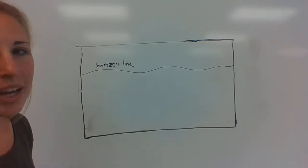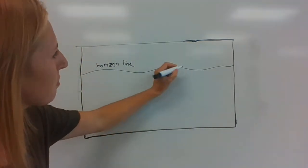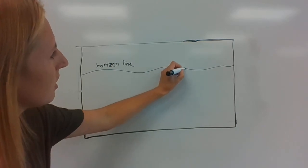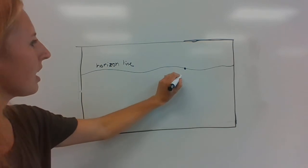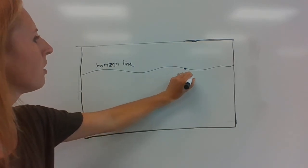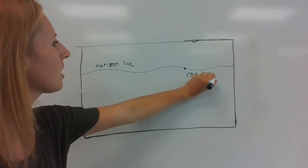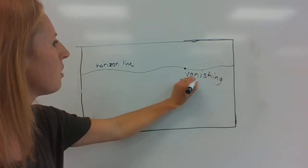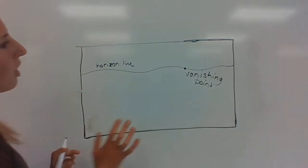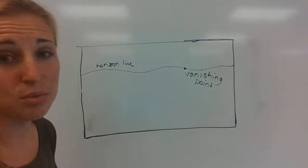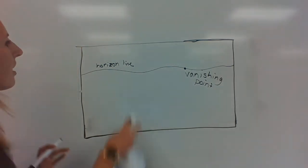So somewhere on your horizon line you are going to put in a point. I'm gonna put mine right there. This is called the vanishing point and I'm gonna write that out right here. Vanishing point. This is where all the lines are going to go to. It's what's going to make your landscape look more realistic. Alright, I'm gonna erase these.